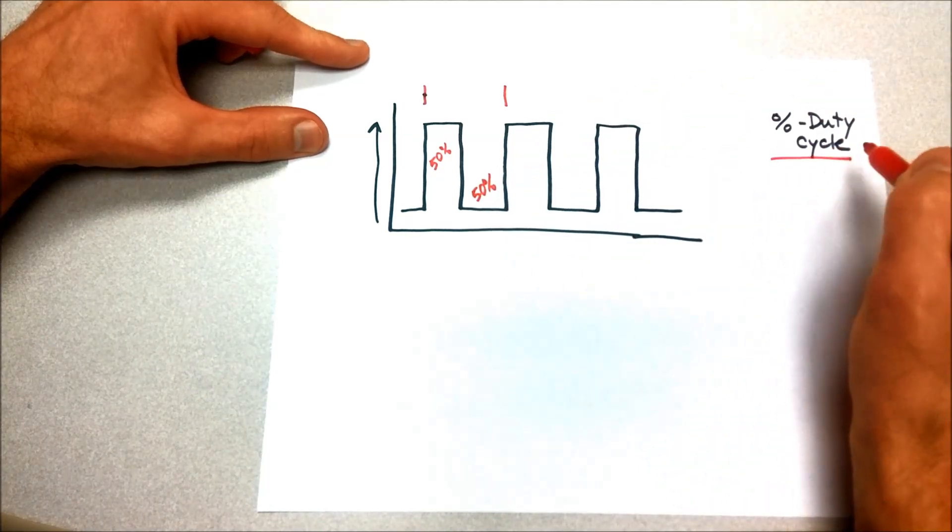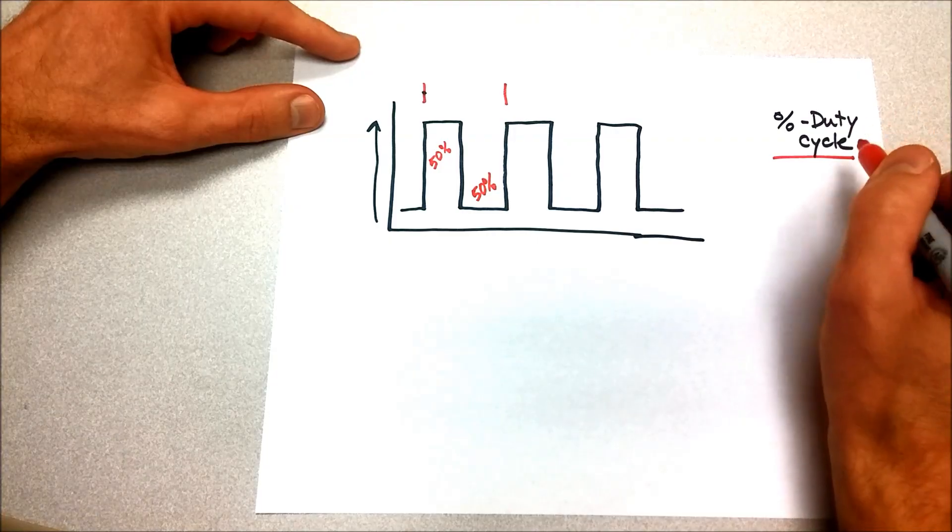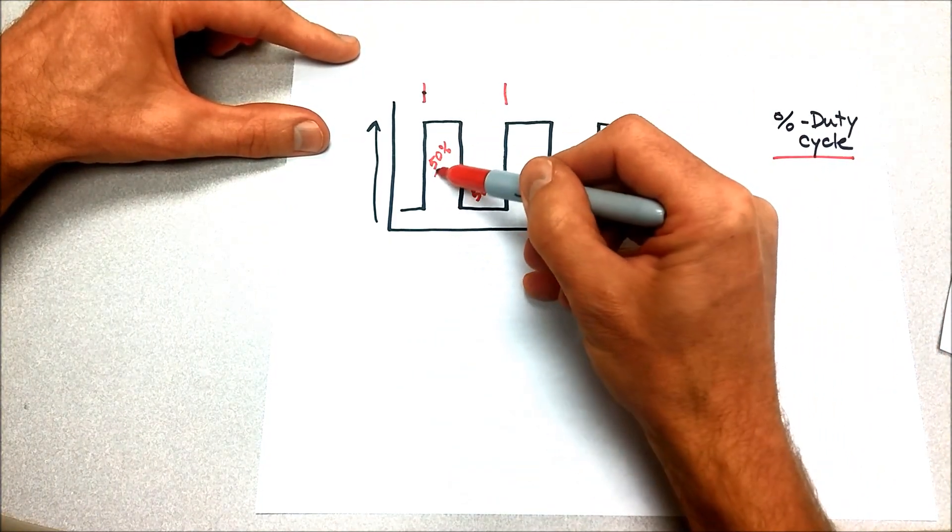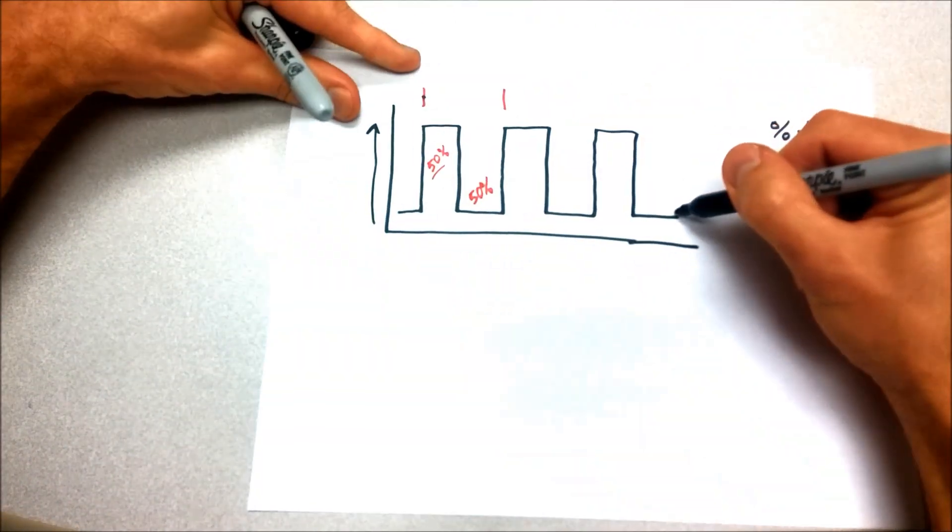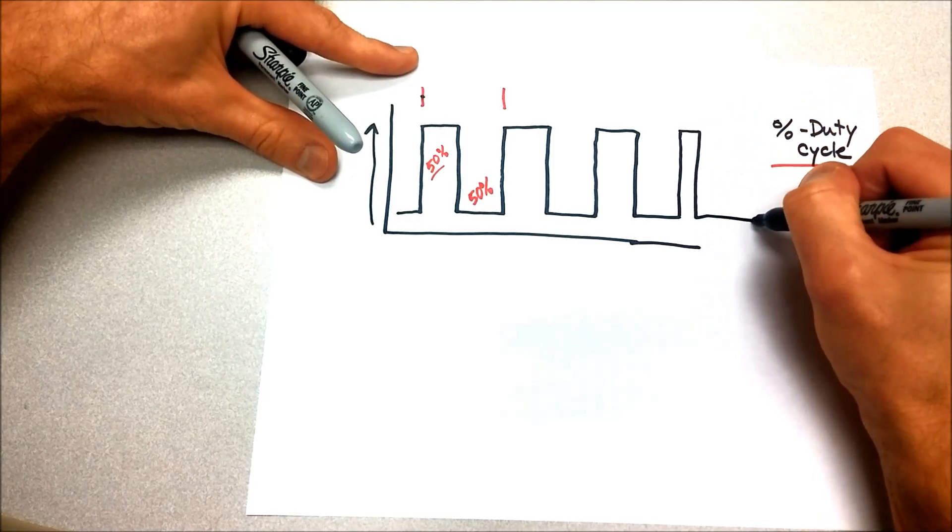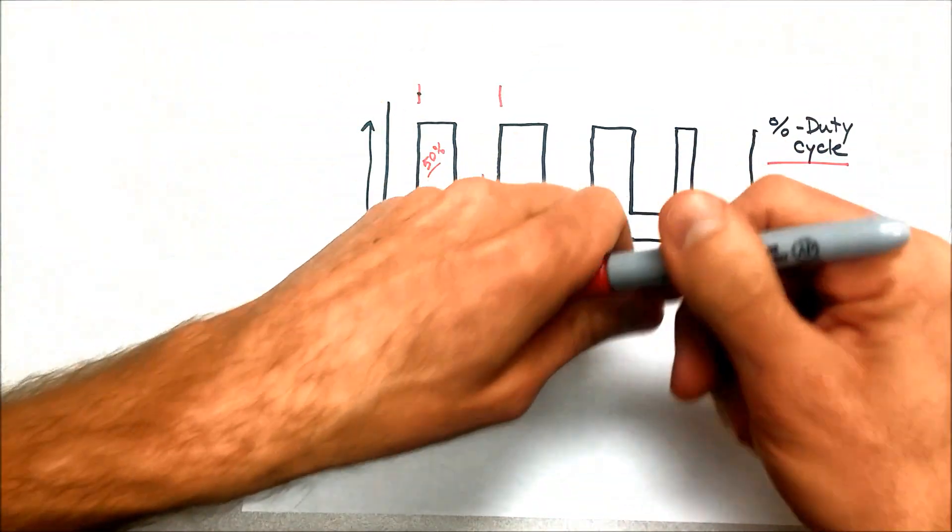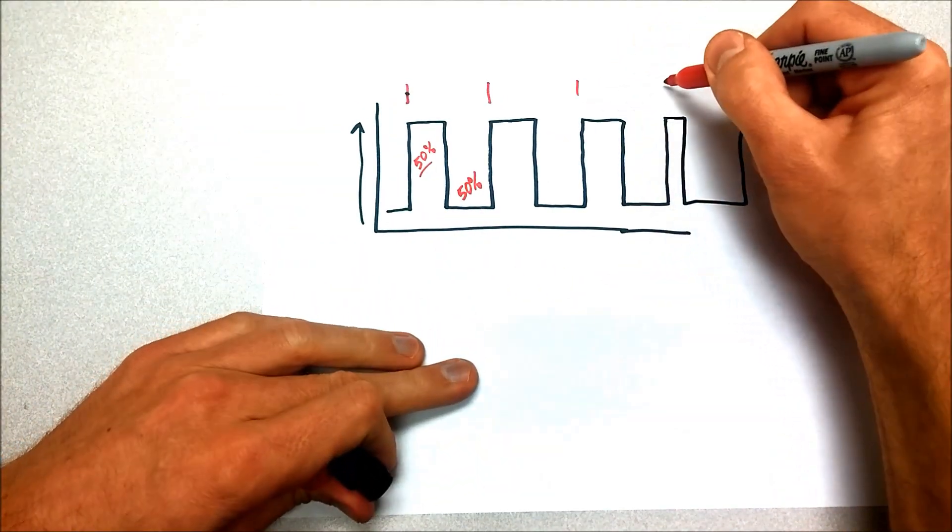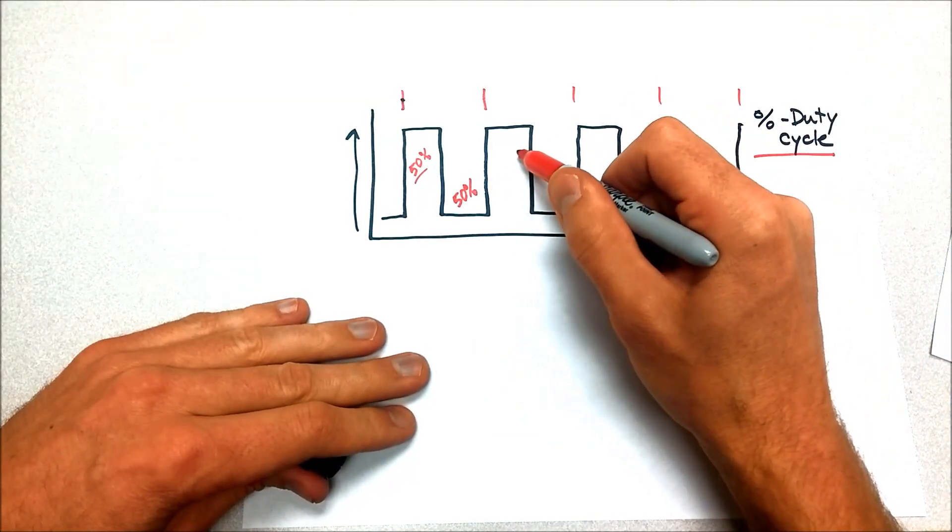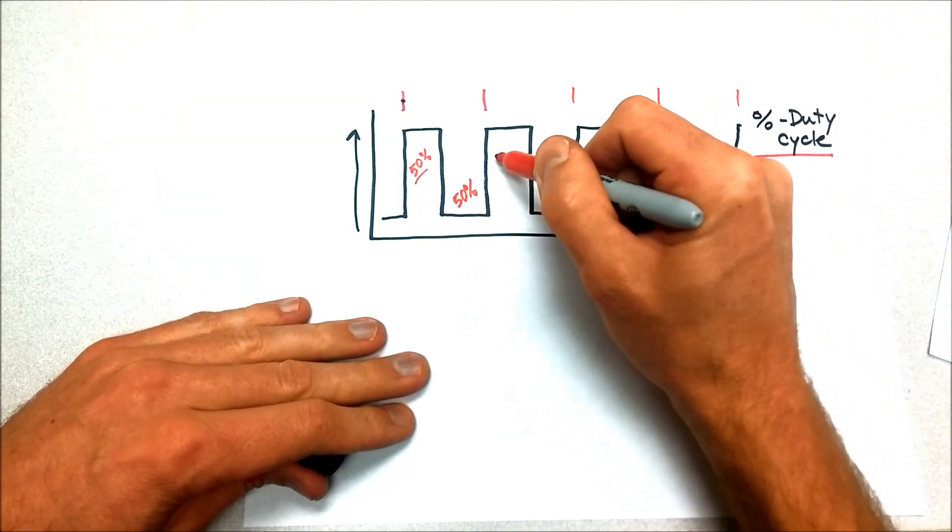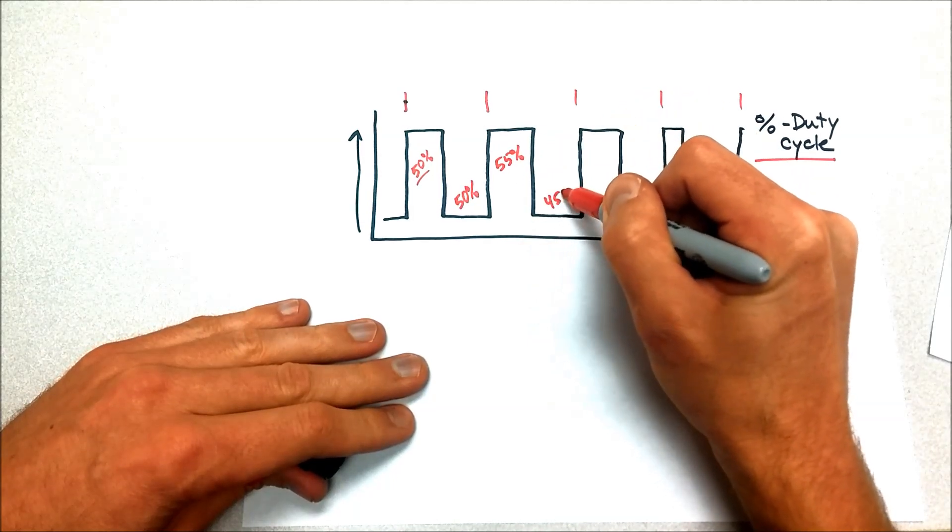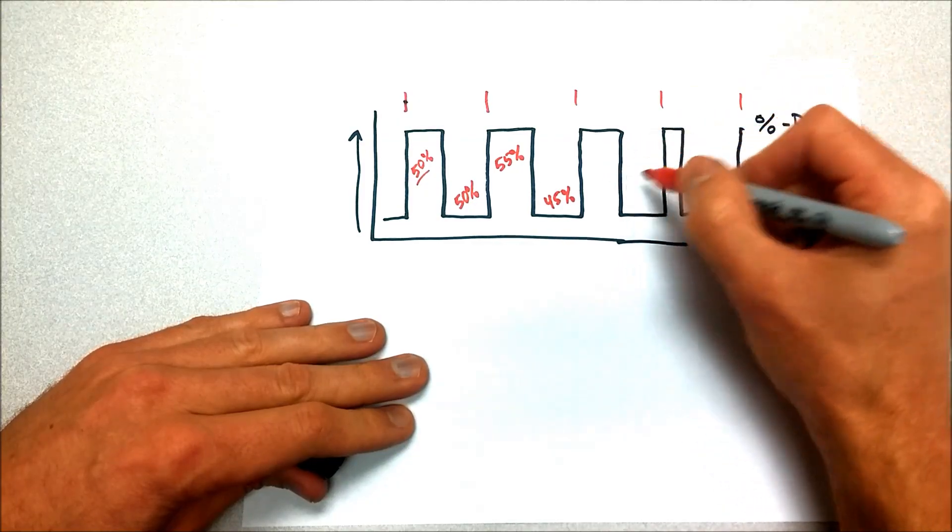And when it comes to duty cycle, we're simply talking about the on time. So this has a 50% duty cycle. I'll add a few more segments here. If I continue to go down here, I can see my cycles are all staying about the same width. This looks like maybe another 50% or it's slightly wider. We could call this a 55% duty cycle, which would mean that it's off 45% of the time.